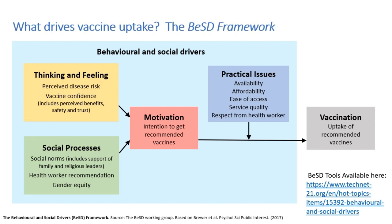We also measure whether women feel they have permission to take their child to a health facility, which can be quite important. Practical issues are the most important according to the literature for vaccination — including whether a caregiver feels vaccinations are available in their area, whether they are affordable in terms of money and time, the ease of access, service quality, and the respect they receive from health workers when seeking vaccinations.